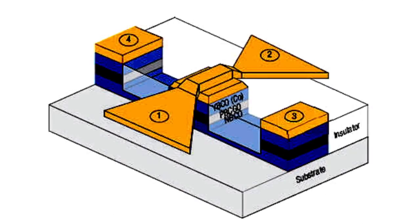Structurally, a Josephson element is represented by two intersecting tin conductors. At the intersection region, they are divided by a tin oxide film which is 10 angstroms thick.